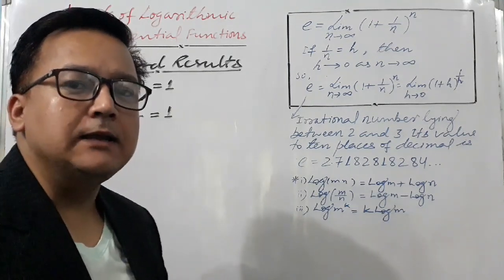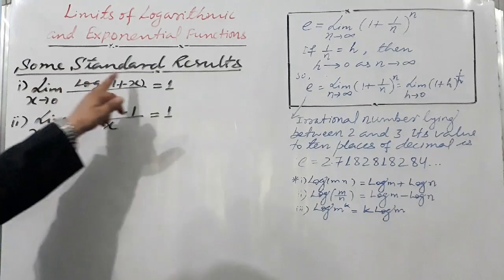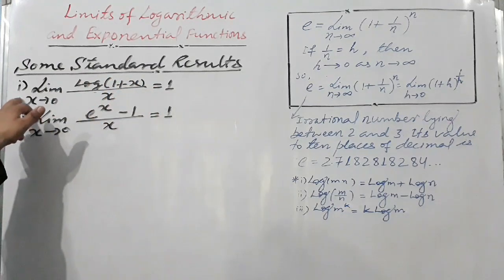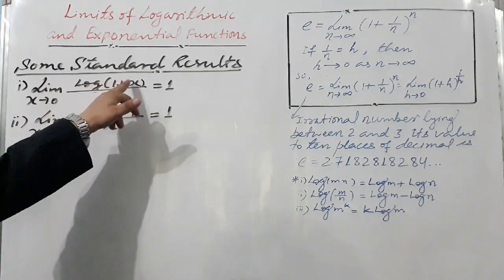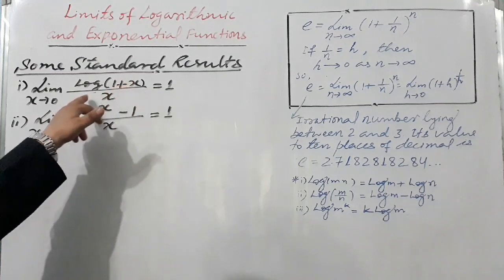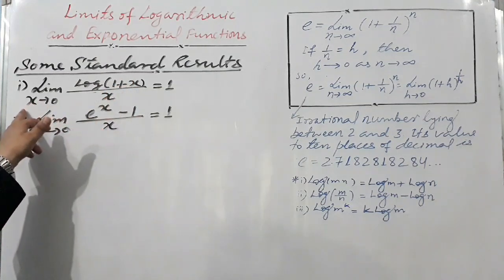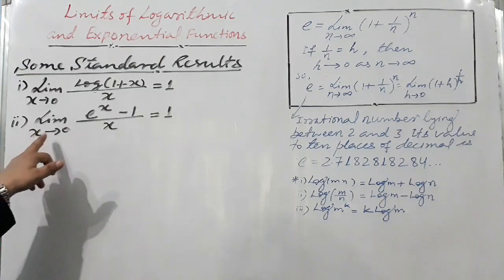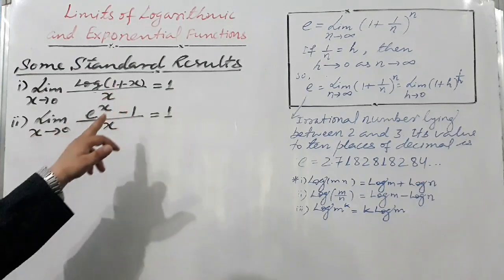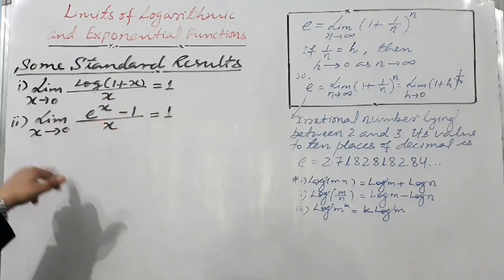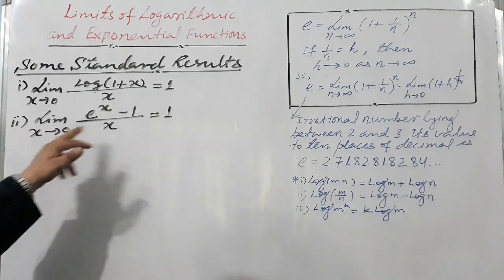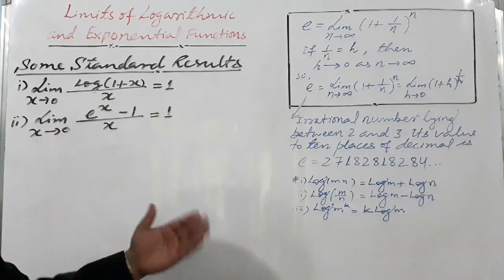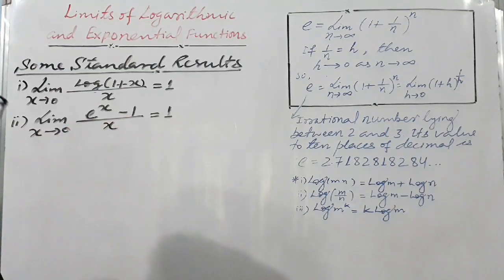Today I will tell you some standard results. First one: the limit of log(1 + x) / x as x tends to 0 is equal to 1. Second one: the limit of (e raised to power x minus 1) / x as x tends to 0 is equal to 1. I will tell you today how to prove these two standard results.